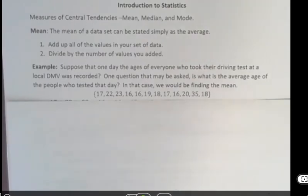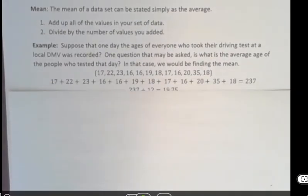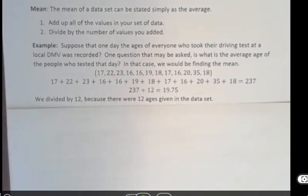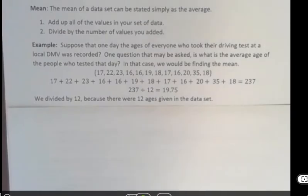So if this were the list of numbers of the ages that the people that came in, we would then add all of those together to get 237, and then we count the number of things that we added, which in this case is 12, and we divide 237 by 12 to get 19.75. We divide it by 12 because there are 12 values given in the data set. Some of them are repeated obviously.